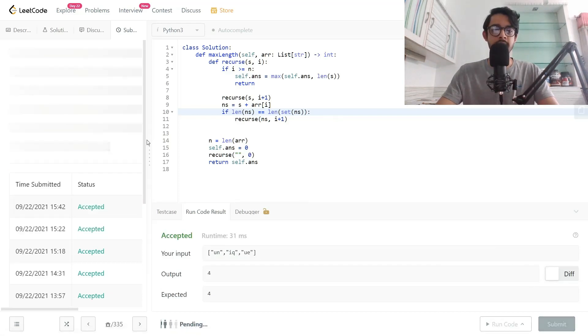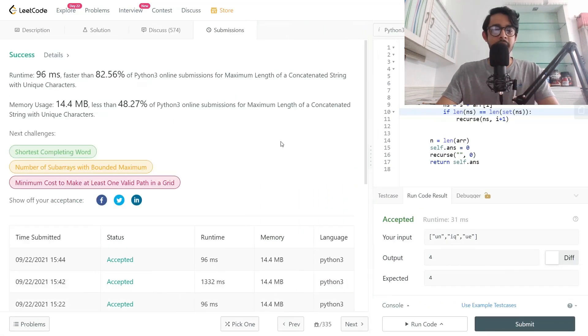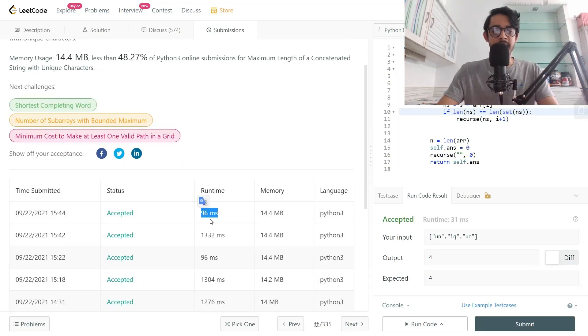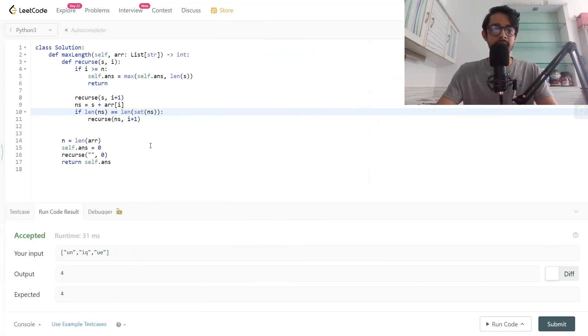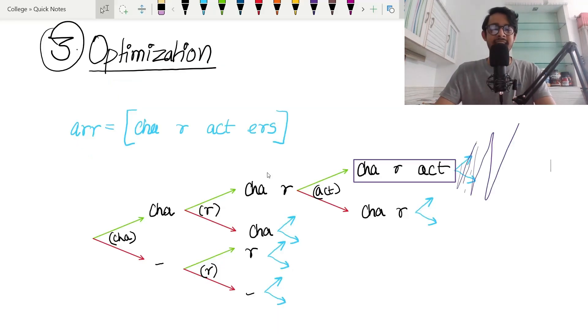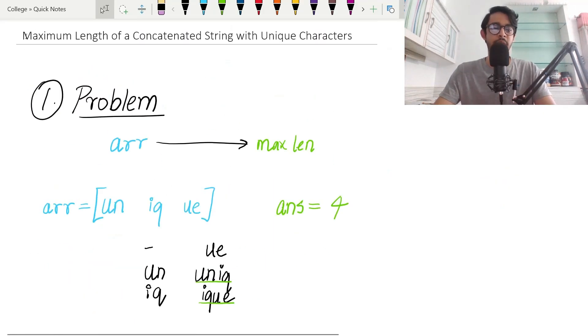Cool, we'll try submitting. If you note the runtime is now 96 milliseconds instead of 1300, which is a very big jump from a simple line change. All we did was add this condition here instead of here. That's it for this video solution of Maximum Length of a Concatenated String with Unique Characters. Thanks for watching.